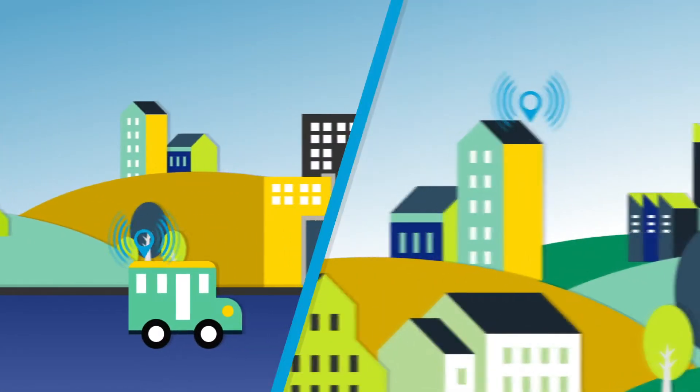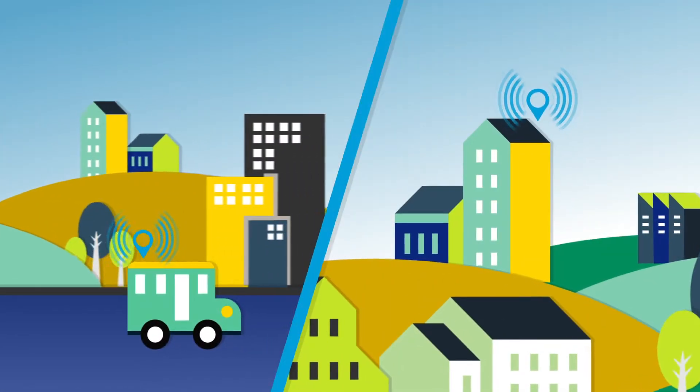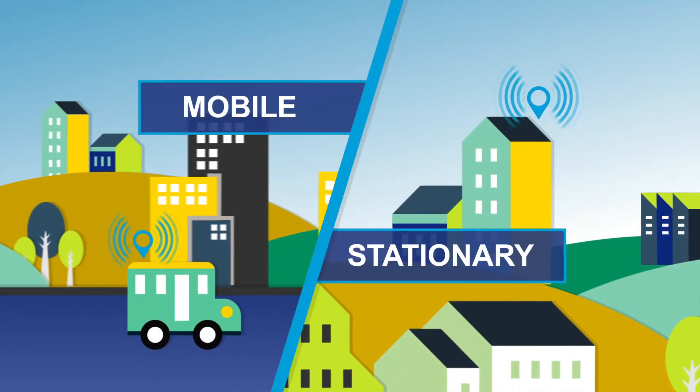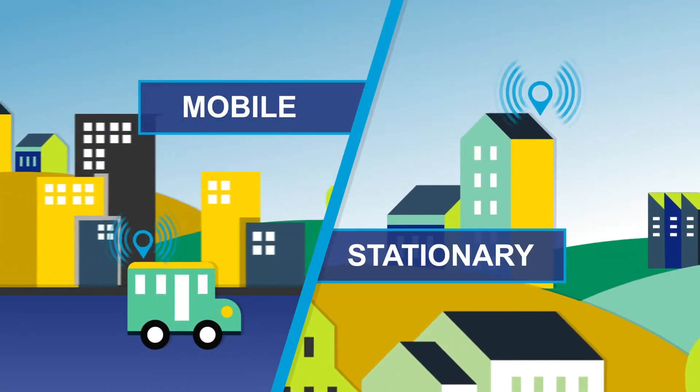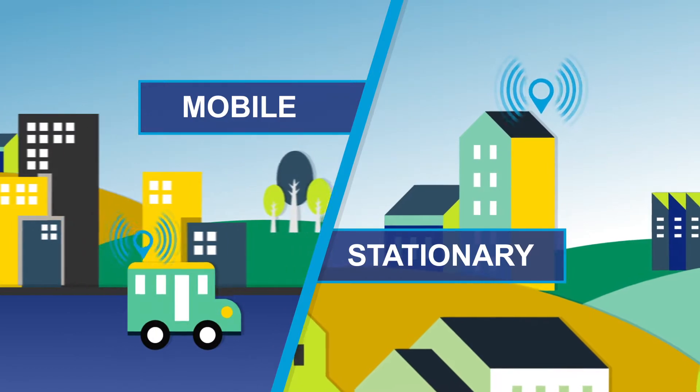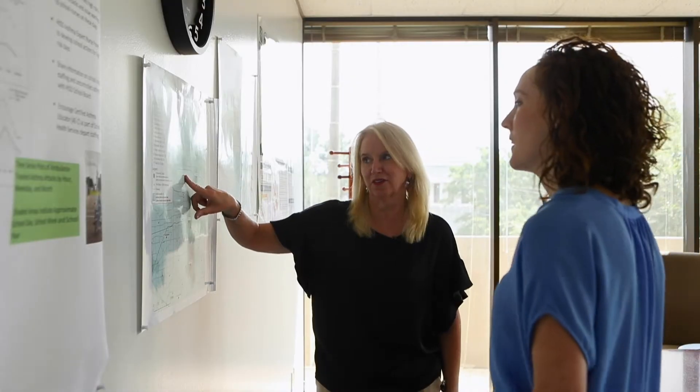In practice, a monitoring strategy could combine both mobile and stationary monitoring to get the best of both approaches. Refer back to your overall goals and design accordingly. These goals will determine what pollutants to measure and the kind of monitoring data you need, which will inform the overall approach and design of your monitoring system.